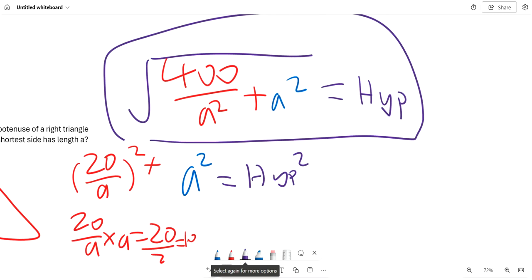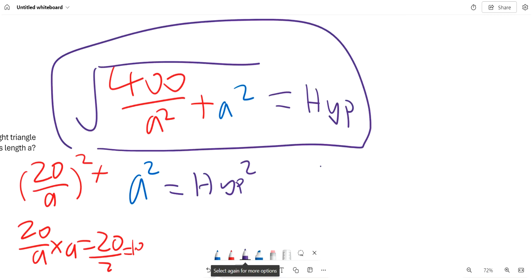But the answer he says is square root of 400 plus a to the fourth over a, I think. So it's just the same format as, yeah, over a.